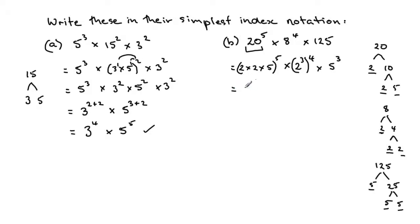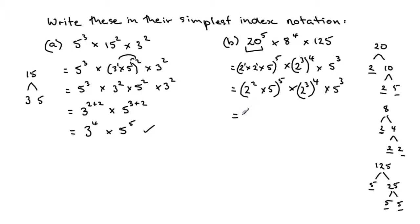We can write the expression as 2 squared times 5 — because there's a 1 and a 1 for the indices — all to the power of 5, times 2 cubed to the power of 4, times 5 cubed. Simplifying by multiplying the indices, we get 2 to the power of 10 times 5 to the power of 5, times 2 to the power of 12 times 5 cubed.